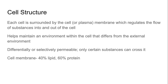When we talk about cellular structure — just a quick refresh — we're talking specifically today about the cell membrane. It plays an important role in regulating the flow of substances into and out of the cell. By doing so, it helps maintain an environment within the cell that is different from the external environment. The cellular membrane is what we refer to as differentially or selectively permeable, so only certain substances can cross it.